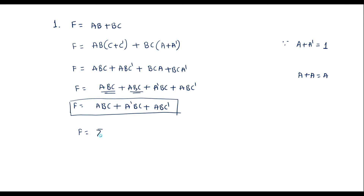This can also be represented as f equals summation m: abc is 1,1,1 that is minterm 7; a dash bc is 0,1,1 that is minterm 3; abc dash is 1,1,0 that is minterm 6. In increasing order: f = Σm(3, 6, 7).